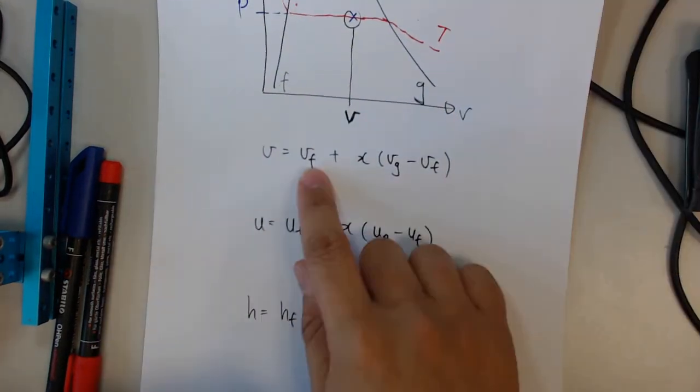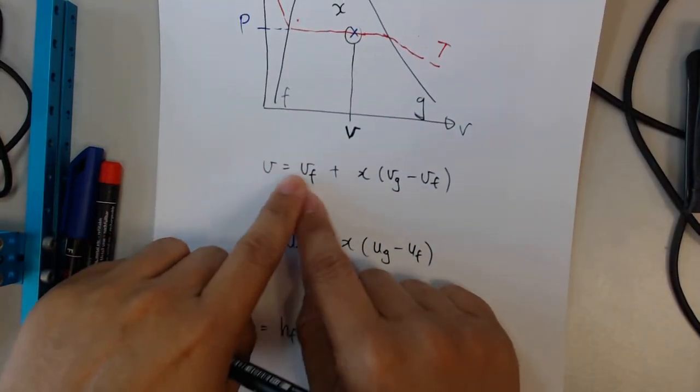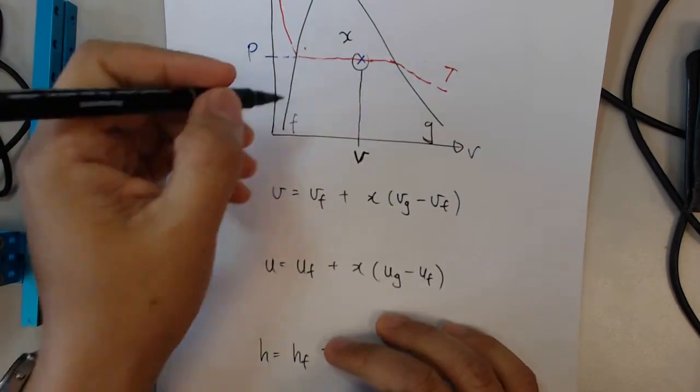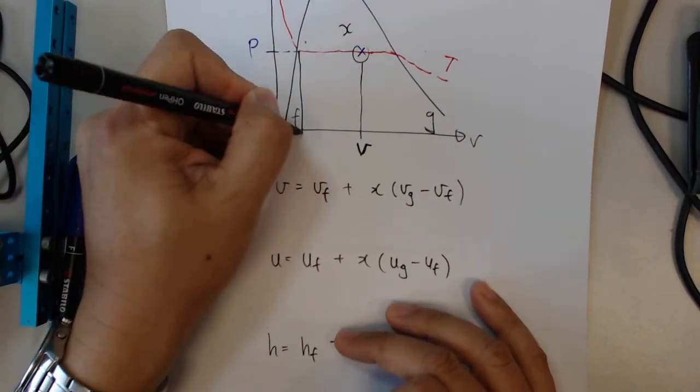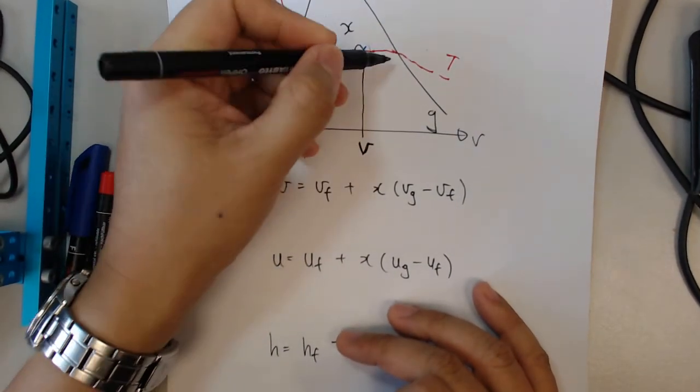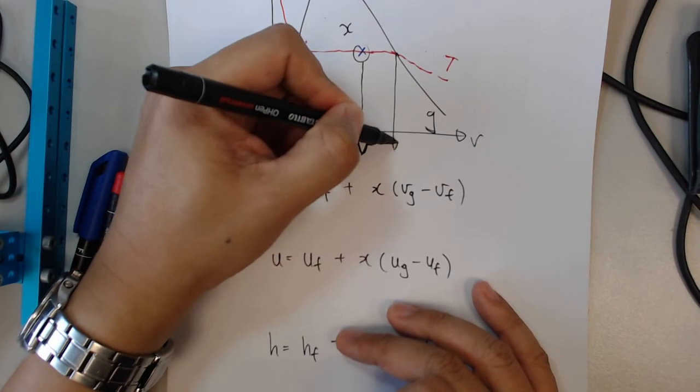Okay, so now let's look at this particular equation over here. V is Vf. In case you haven't noticed, this V is Vf, and this V here is Vg.